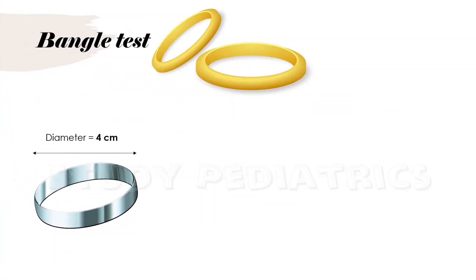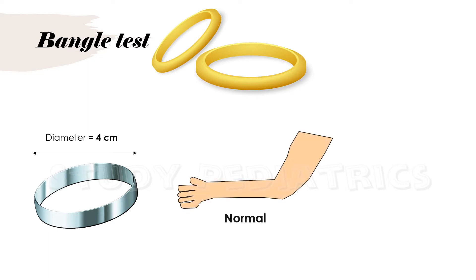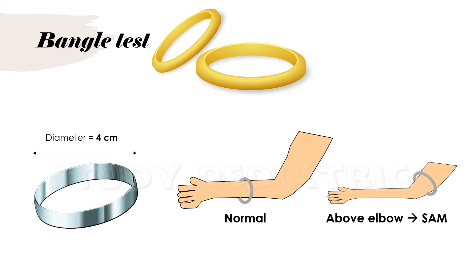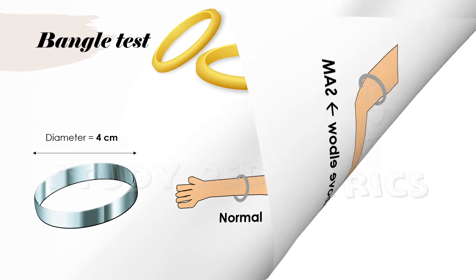The bangle test uses a bangle of approximately 4 cm diameter, which is pushed up to the greatest extent in the forearm. In a normal, well-fed child, the bangle does not cross the elbow and is stuck there. But in a malnourished child, since the forearm is thin, the bangle easily crosses the elbow, indicating malnutrition. Although a simple test, it helps in screening malnourished children.